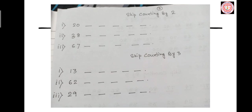Skip counting by 5. 30, 35, 40, 45, 50, 55, 60, 65, 70. 10, 15, 20, 25, 30, 35, 40. 80, 85, 90, 95, 100, 105, 110, 115, 120. In skip counting by 5, all numbers end with a 5 or a 0.